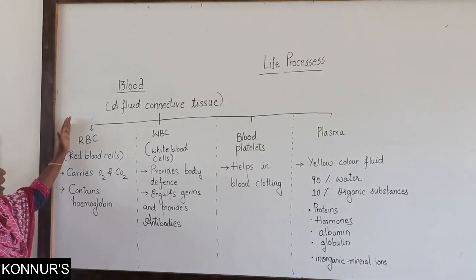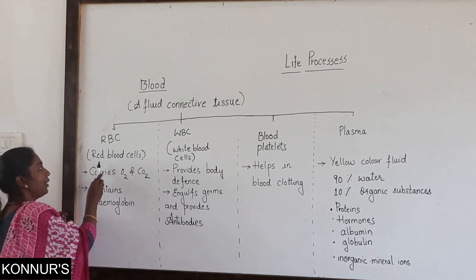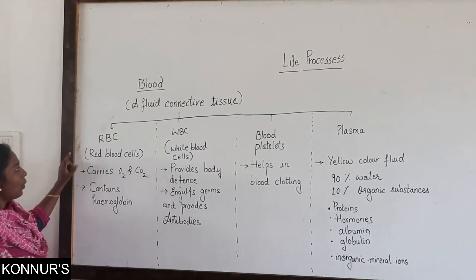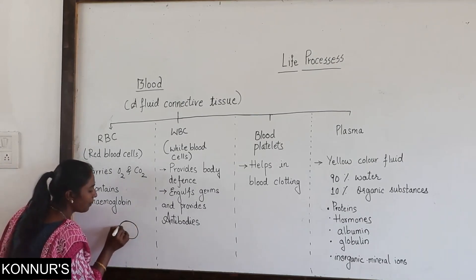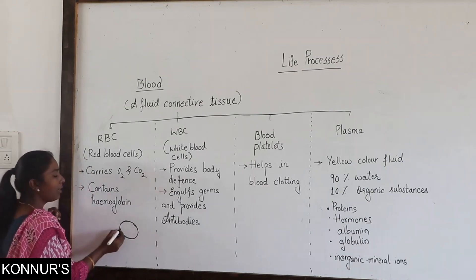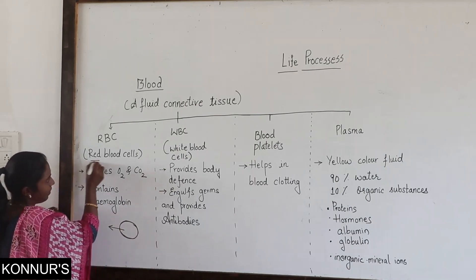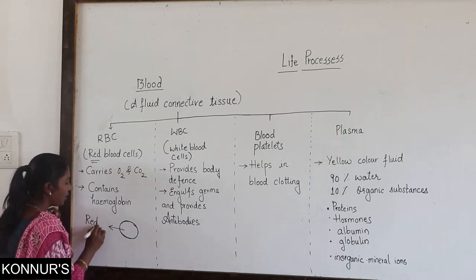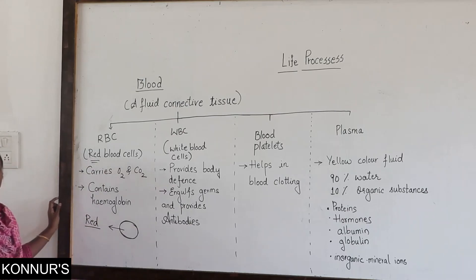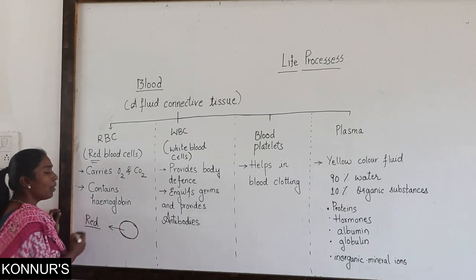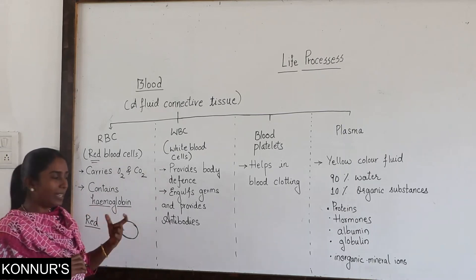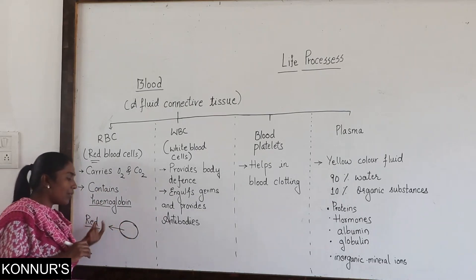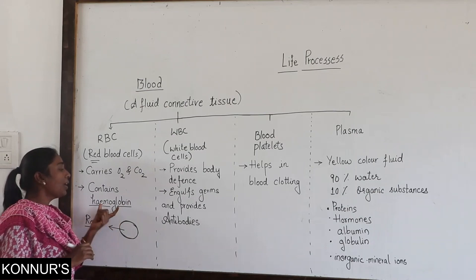Let us start with RBC — red blood cells. These red blood cells are disc-like in shape. The color of these red blood cells is, as the name refers, red in color. Why is this cell red in color? This cell is red in color because of a pigment called hemoglobin.